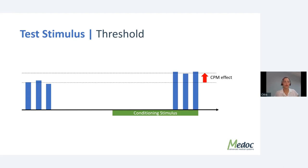With regard to test stimulus types, you can use a threshold stimulus — often used with pressure pain thresholds — where you see a specific threshold for a person. Under the conditioning stimulus, with effective CPM, the threshold will rise: the person starts to hurt just a little bit later than before. That rise in threshold is the CPM effect. You can also use a suprathreshold stimulus, calibrated to that specific person — for instance, finding what heat stimulus causes a VAS-60 rating.